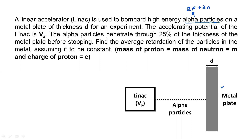This is the metal plate right here. The accelerating potential of the linac is V₀ — this is the potential difference through which the particle is accelerated, and the final kinetic energy equals the energy gained in this potential difference. The alpha particles penetrate through 25 percent of the thickness d before stopping. So the stopping distance x equals d/4.